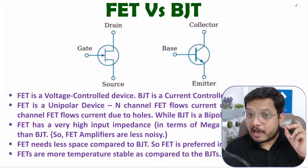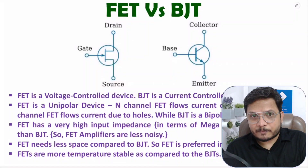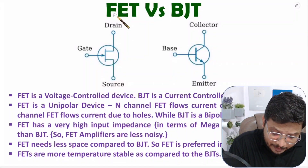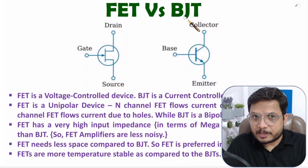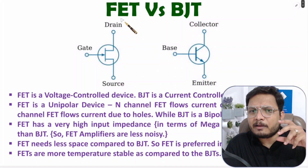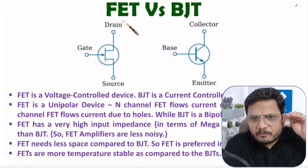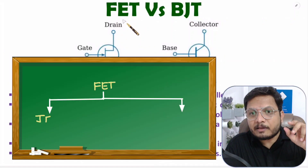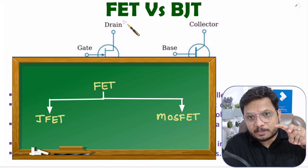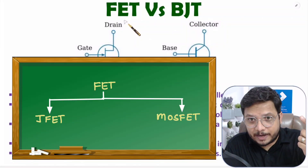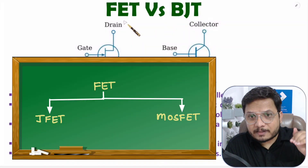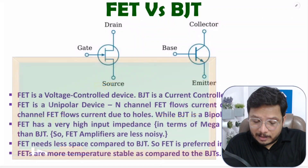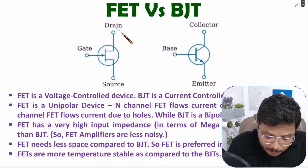Let us compare FET and BJT by symbol first. FET means field effect transistor and BJT means bipolar junction transistor. With FET, there are different family members — two categories: JFET and MOSFET. JFET means junction field effect transistor, and MOSFET means metal oxide semiconductor field effect transistor. Here, I will be explaining the symbol of JFET.